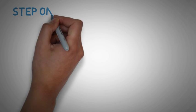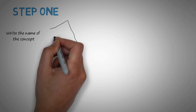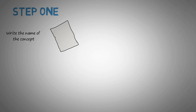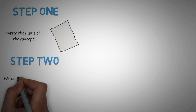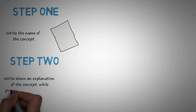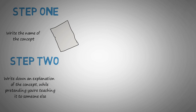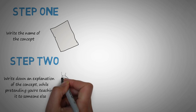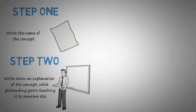Step 1: Write the name of the concept at the top of a blank piece of paper. Step 2: Write down an explanation of the concept on the page in plain English. Pretend you're teaching it to someone else, for example a student. Ideally, write and speak at the same time, just as a teacher does at the blackboard.